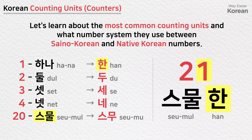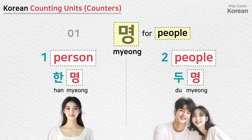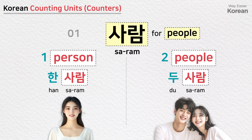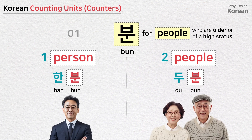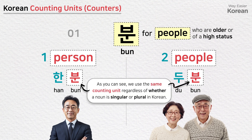Let's learn about the most common counting units and what number system they use between Sino-Korean and Native Korean numbers. 명 is used for counting people: one person — 한 명, two people — 두 명. We can also say 한 사람, 두 사람, or use 분 for people who are older or of high status: 한 분, 두 분. We use the same counting unit regardless of whether a noun is singular or plural in Korean.